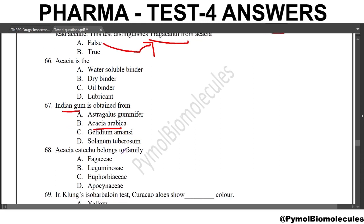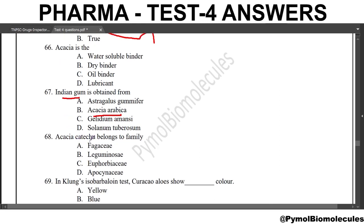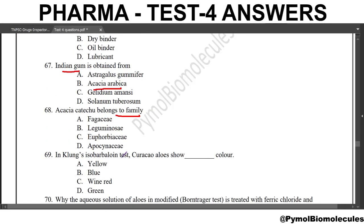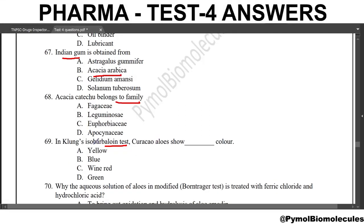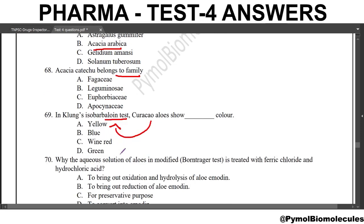Next question: Acacia catechu belongs to the family Leguminosae. Next question: in Klunk's isobarbaloin test, Curacao aloe shows which color? The answer is wine red color. The Klunk's isobarbaloin test is used for aloes.